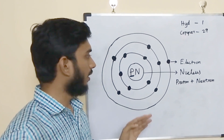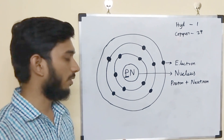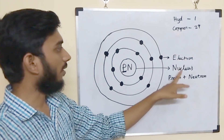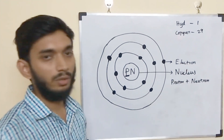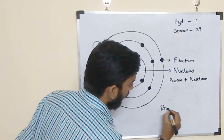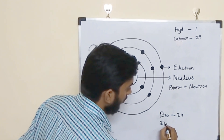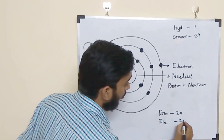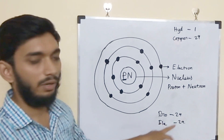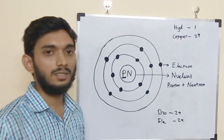If you look at a balanced atom, the number of protons is equal to the number of electrons. For copper, the proton count is 29 and the electron count is also 29. When protons and electrons are equal, it is a balanced atom.